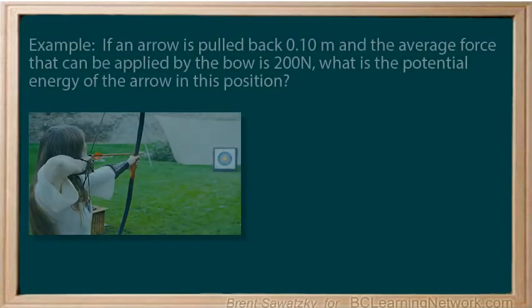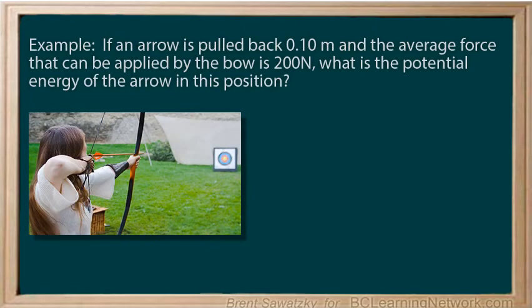For example, if an arrow is pulled back 0.1 meters and held, and the average force it can apply on the arrow is 200 newtons, then the potential energy of the arrow is...